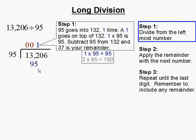Then we multiply 1 times 95, that gets us 95. Then we're going to subtract 95 from 132. And 37 is your remainder.